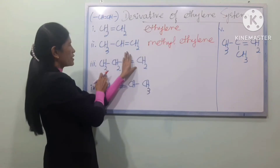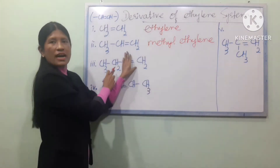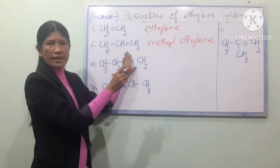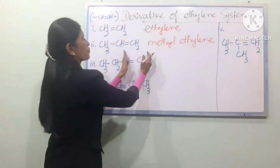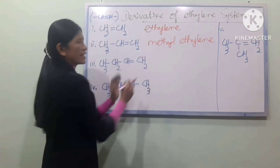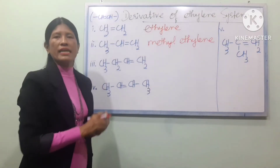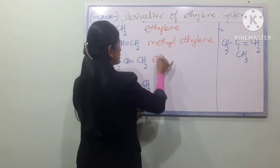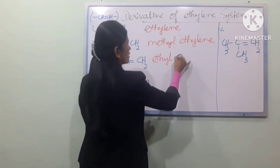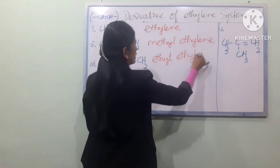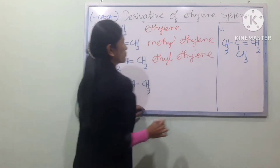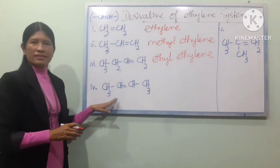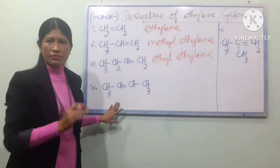So we can use the word ETHYL. CH3 and CH2 together give us the ETHYL group. So we refer to these substituents as ETHYL.